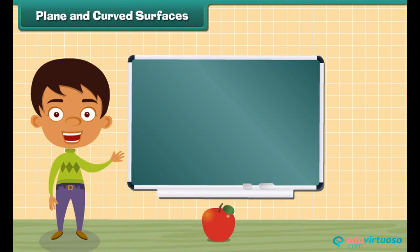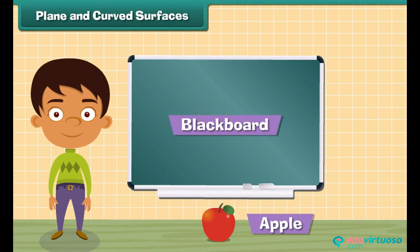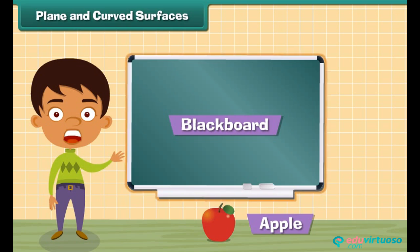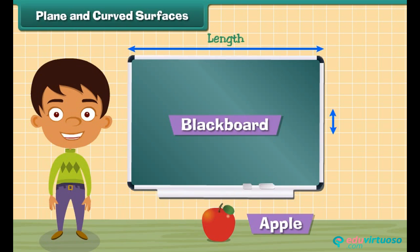Plane and curved surfaces. Look at these two objects: blackboard and an apple. The blackboard's plane surfaces are its surfaces which have length and breadth. When you touch the surface of an apple, its surface is not straight. This is a curved surface.